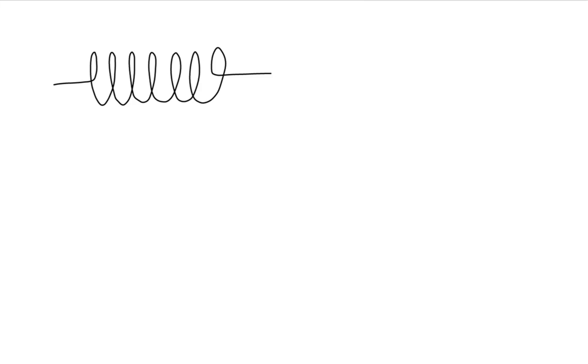To solve this problem, let's start with a sketch of our solenoid. We have a solenoid of a certain radius and a certain length with a certain current running through it. In this sketch we indicate the current running from left to right, with dots indicating the current coming towards us at the top, and x's indicating the current going away from us at the bottom.